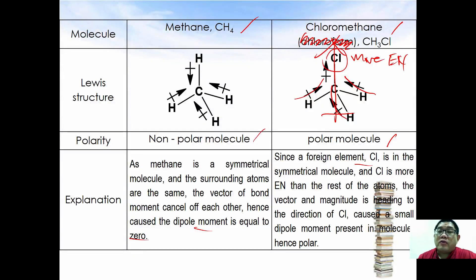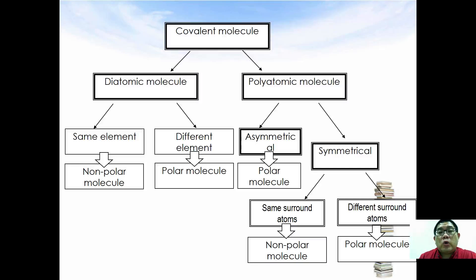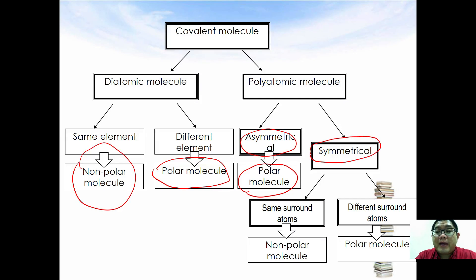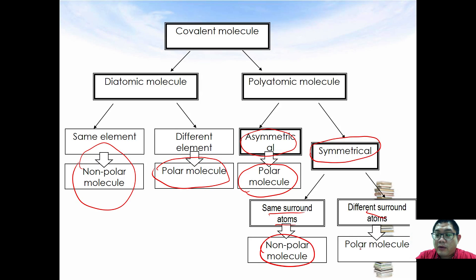To summarize in table form: a diatomic molecule of the same elements with no electronegativity difference is guaranteed non-polar; if made of different elements, it is guaranteed polar. For polyatomic molecules, if asymmetrical — containing lone pair electrons — it is generally polar. If symmetrical with no lone pairs and the same surrounding atoms, the molecule is non-polar. However, if surrounding atoms are different elements, the molecule becomes polar.